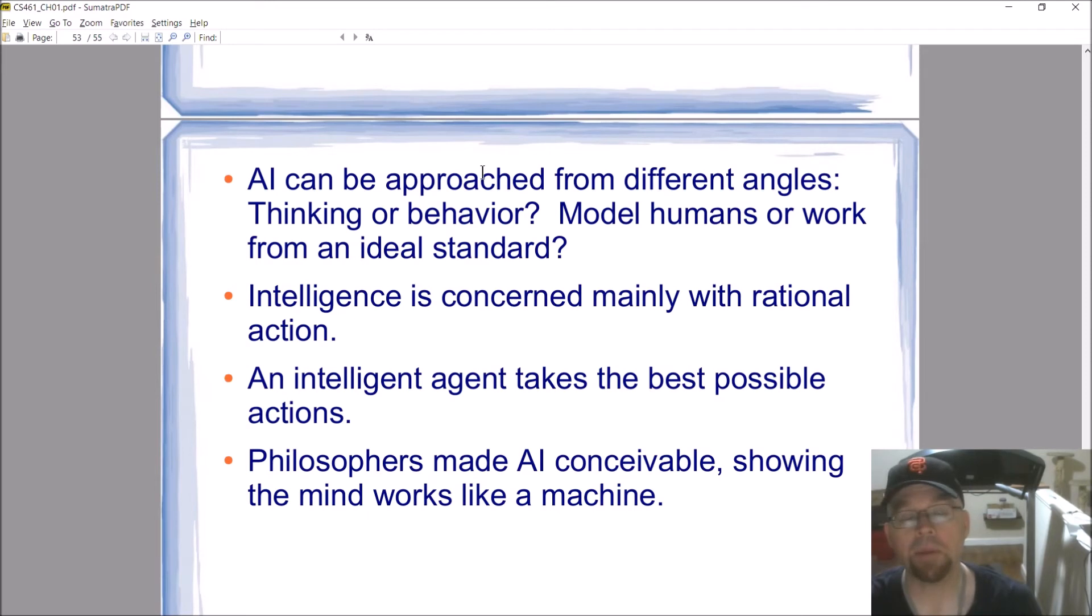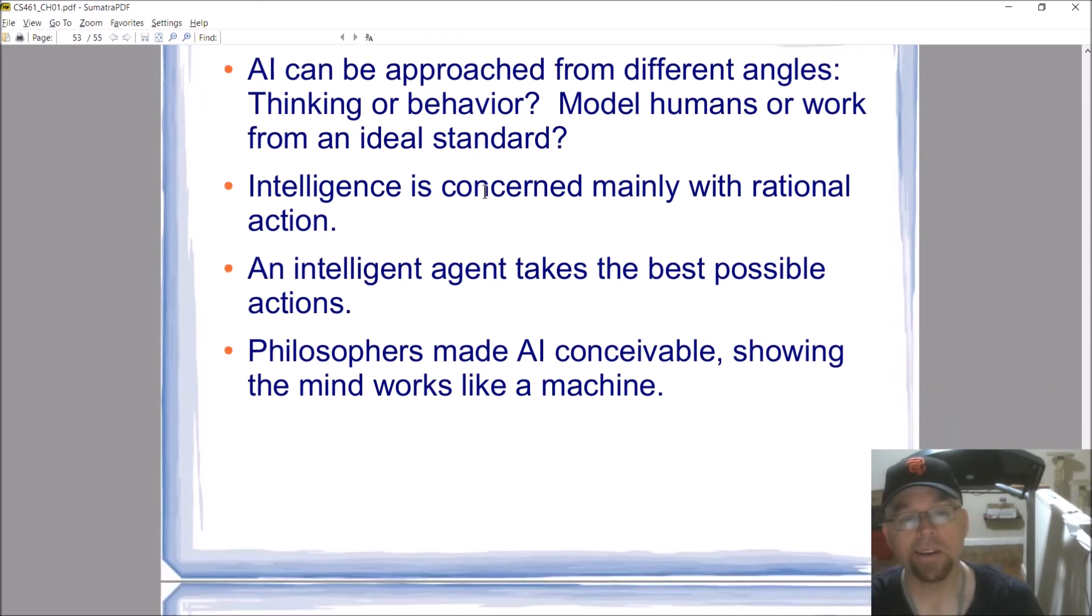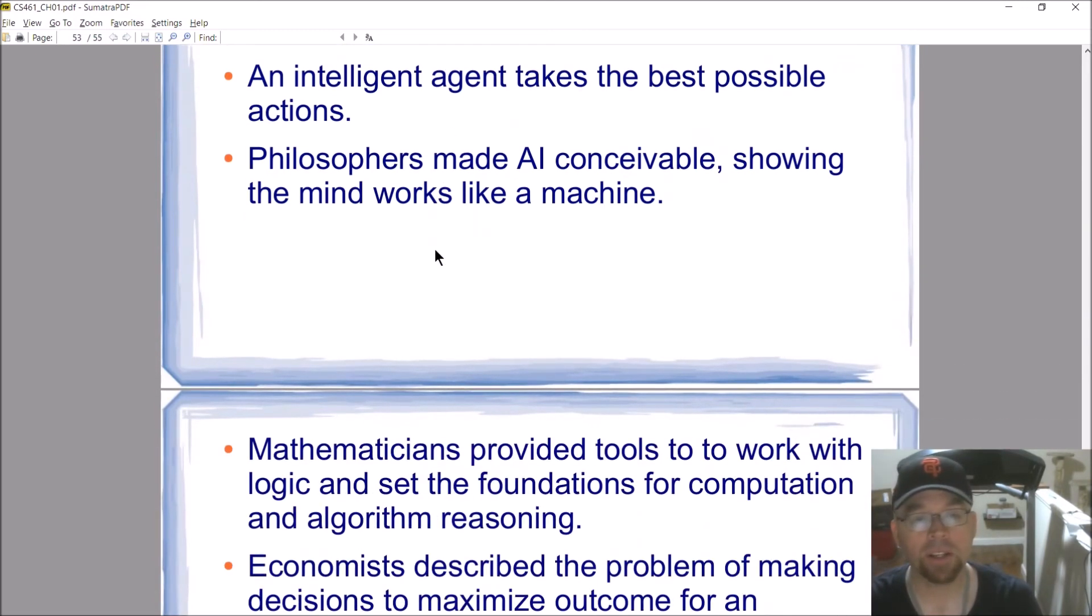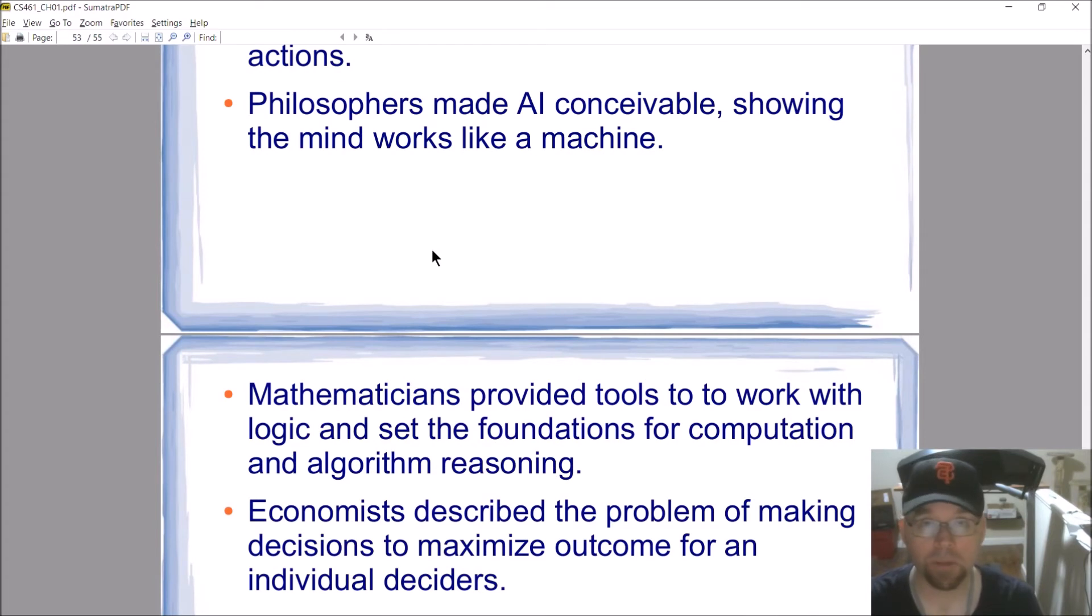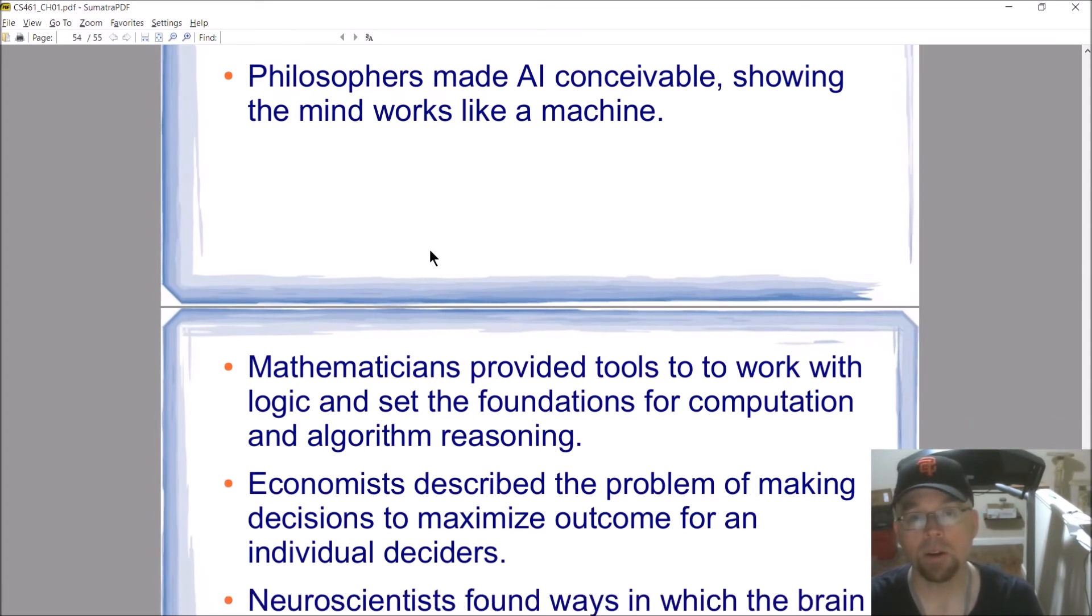Philosophers had a huge contribution to AI. It wasn't for them, we couldn't even conceive of it because they were able to demonstrate, at least to a limited extent, that the mind works like a machine. And so we can model a mind by using a machine artifact.